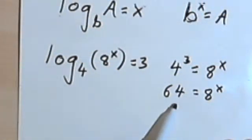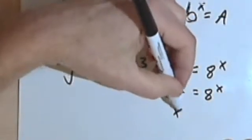Well, 8 squared is 64. So x must have been 8 to the x. So x must equal 2.